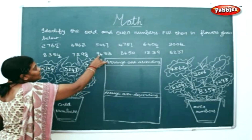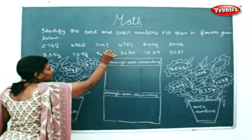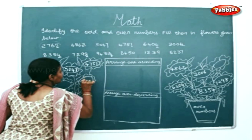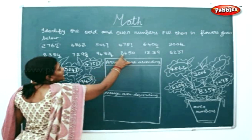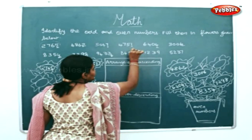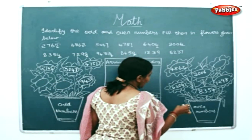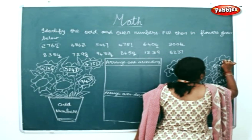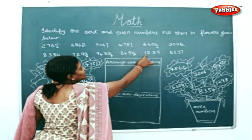Next, 9433 — 3 is an odd number, so I'll write it in the odd numbers place: 9433. Next, 8450 — 0 is an even number, so I'll write it in the even numbers place: 8450.